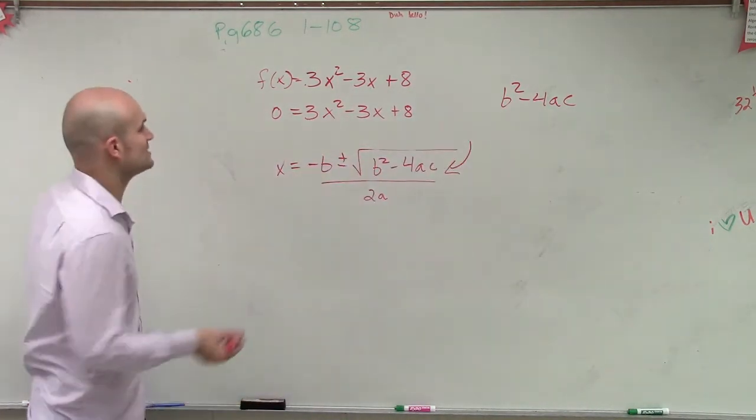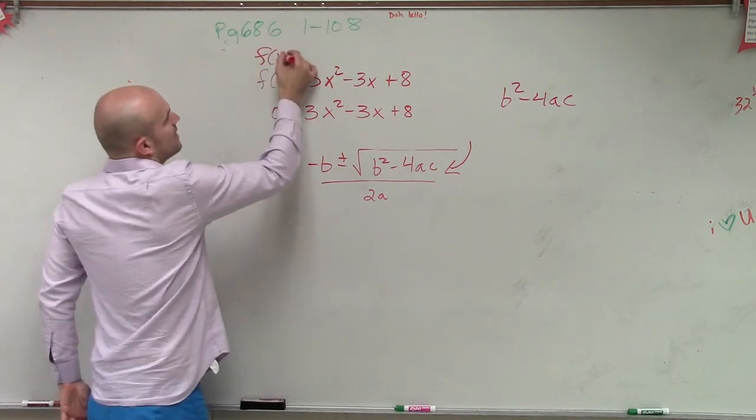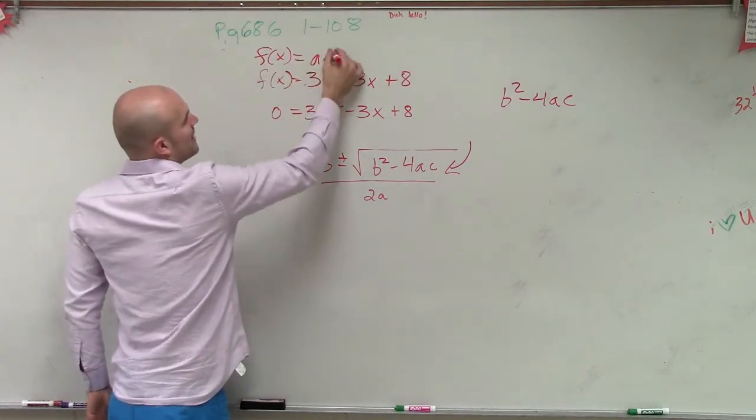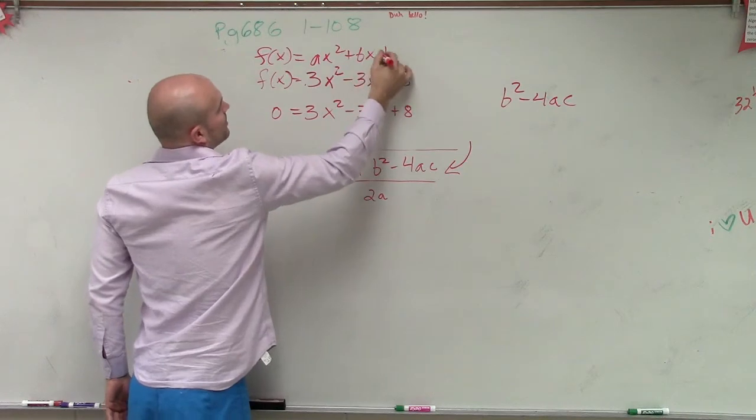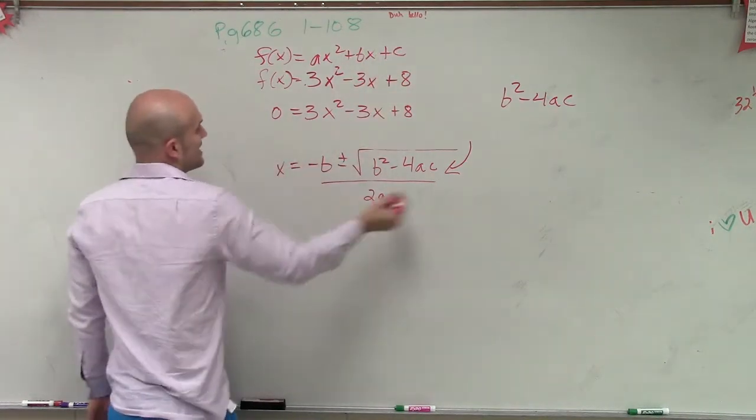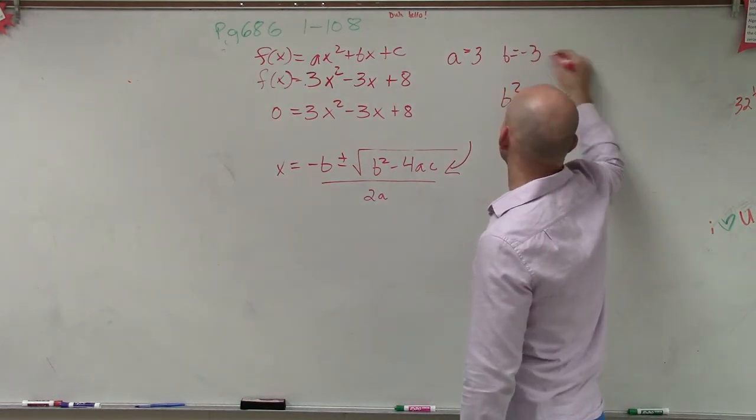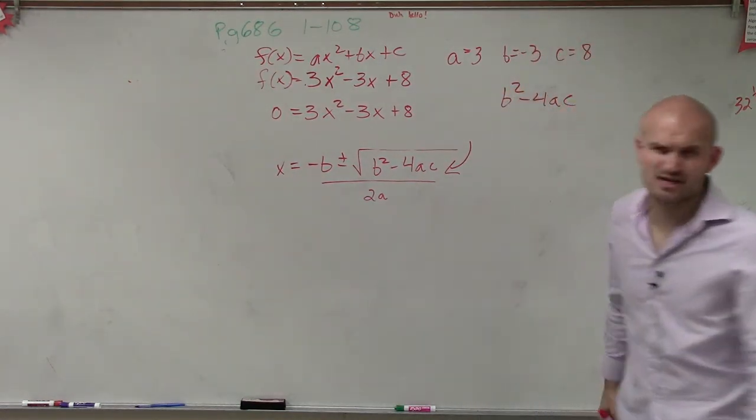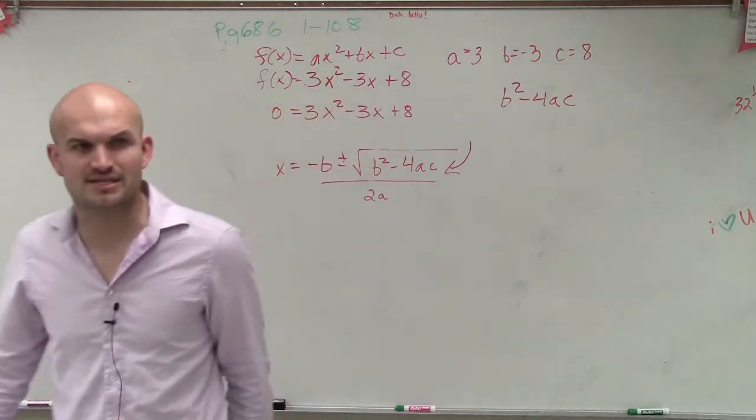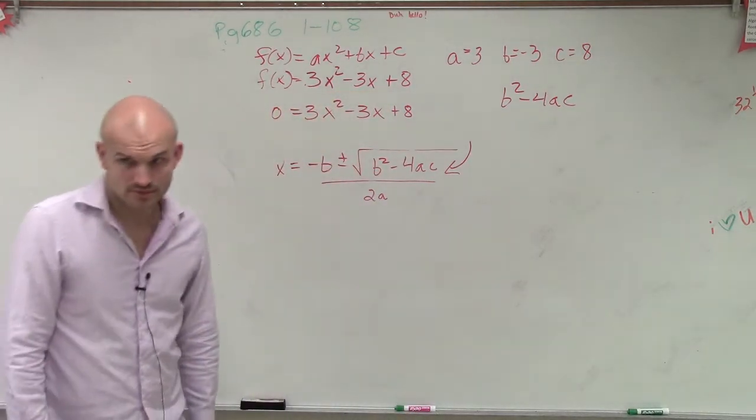So let's go ahead and do this. When Chase is doing this, he needs to remember that the standard form is ax² + bx + c. So therefore, I can say that a equals 3, b equals -3, and c equals 8.